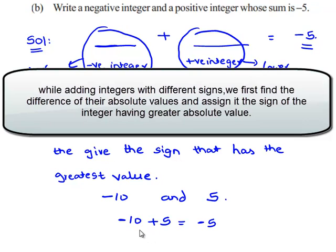When we add two integers of different sign, that is 10 is having negative sign and 5 is having positive sign, we take the difference, 10 - 5 gives 5, and give the sign that has the greatest value. 10 is having a negative sign.